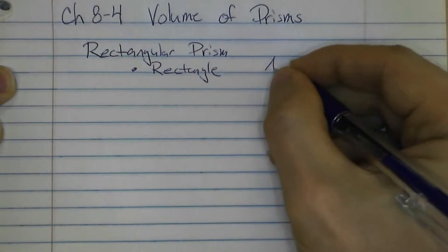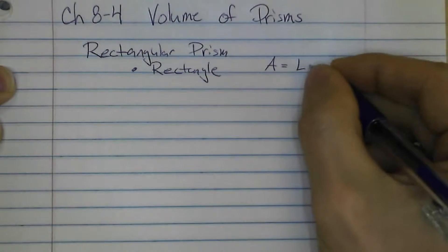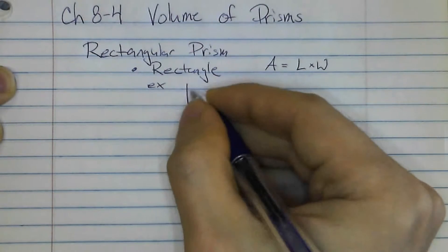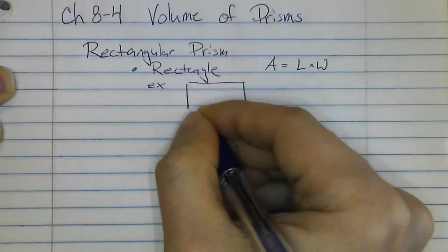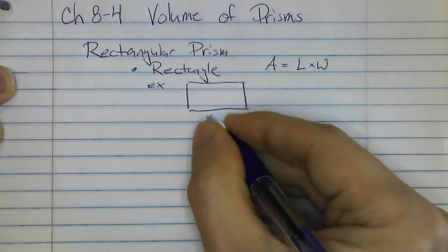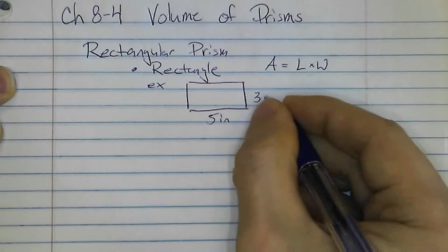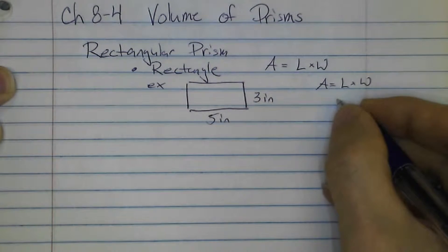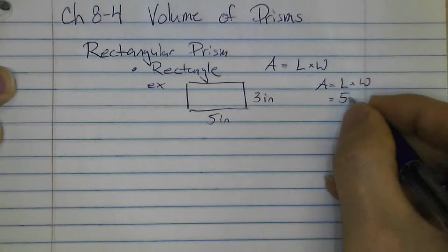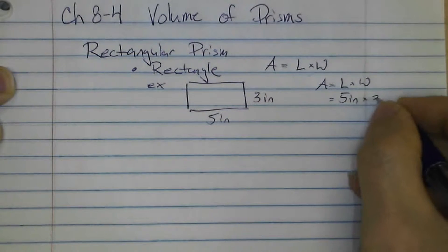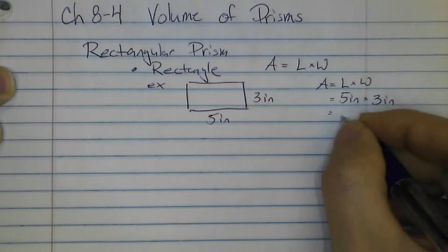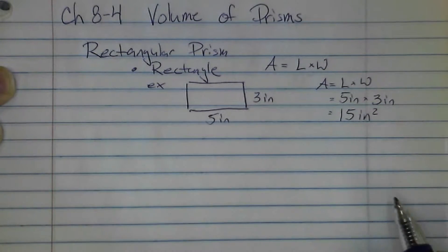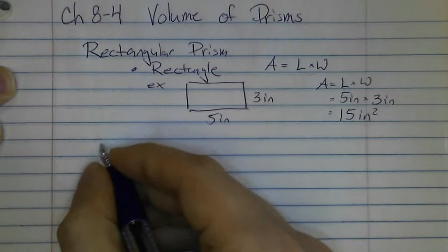The area of a rectangle is found with the equation: area equals length times width. For example, say we had a rectangle that is 5 inches by 3 inches. Area is length times width, so we multiply 5 inches by 3 inches. 5 times 3 is 15, and inch times inch is inches squared, so the area is 15 inches squared.